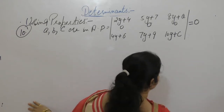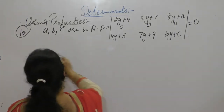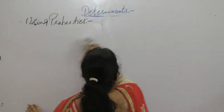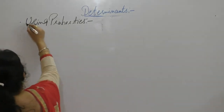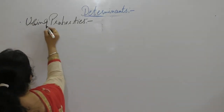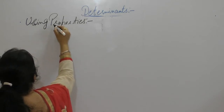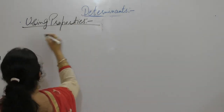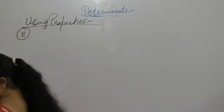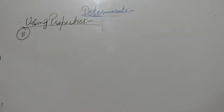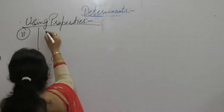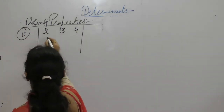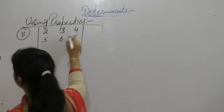Now the next one. Question number 11: find the value of the determinant. The matrix entries are 2, 3, 4, 5, 6, 8.